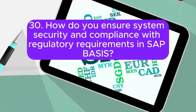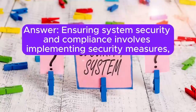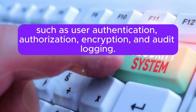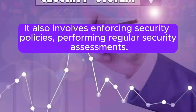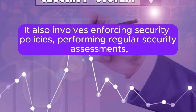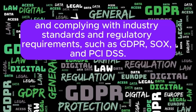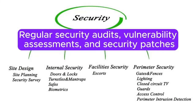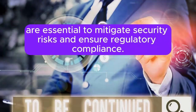Question 30: How do you ensure system security and compliance with regulatory requirements in SAP BASIS? Ensuring system security and compliance involves implementing security measures such as user authentication, authorization, encryption, and audit logging. It also involves enforcing security policies, performing regular security assessments, and complying with industry standards and regulatory requirements such as GDPR, SOX, and PCI-DSS. Regular security audits, vulnerability assessments, and security patches are essential to mitigate security risks and ensure regulatory compliance.